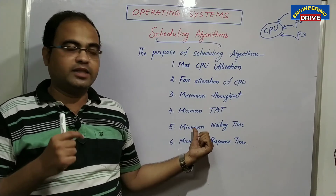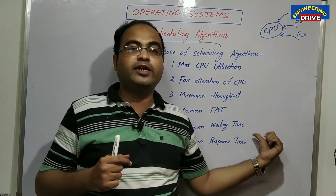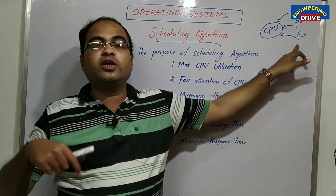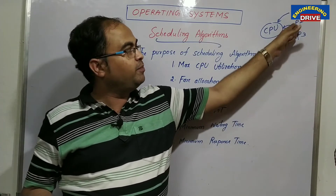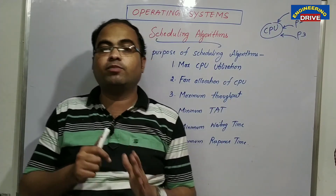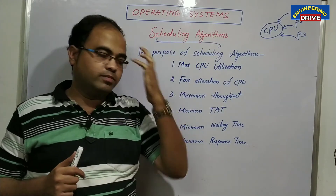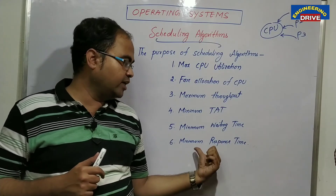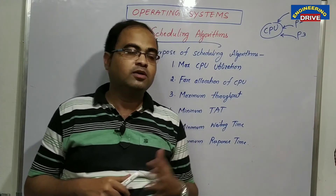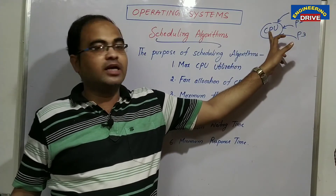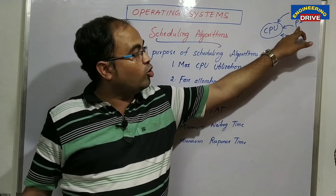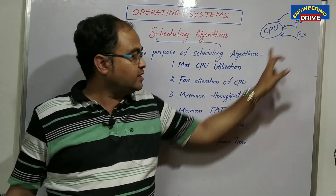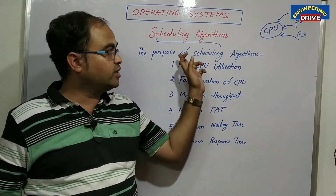The fifth advantage and purpose of using a scheduling algorithm is minimum waiting time, which means if P1 got the chance for execution, P2 and P3 don't need to wait for a long period of time — they will immediately get their chance, so their waiting time is considerably reduced. The last advantage is minimum response time. Response time means, while P1 is being executed, how many seconds or milliseconds it takes for P2 to get the chance for execution — that time should also be minimum if we use a proper scheduling algorithm.